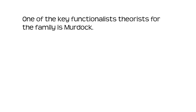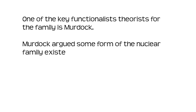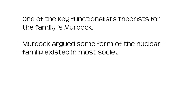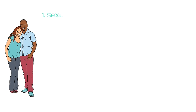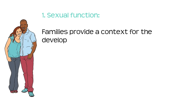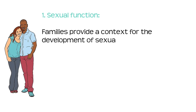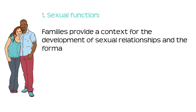One of the key functionalists for the family is Murdoch. Murdoch argues some form of the nuclear family existed in most societies, making it universal. He saw the family as having four main functions. Number one: the sexual function. Families provide a context for the development of sexual relationships and the formation of intimate partnerships.